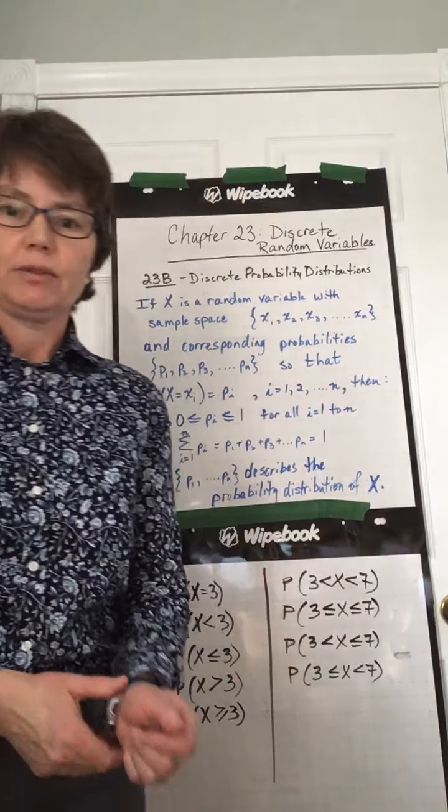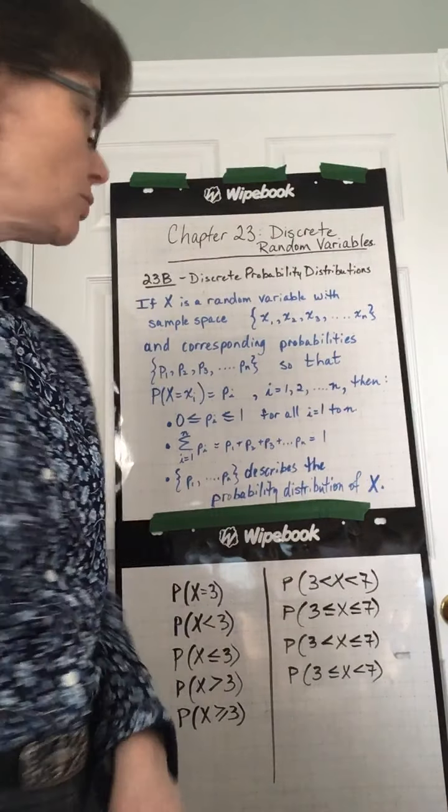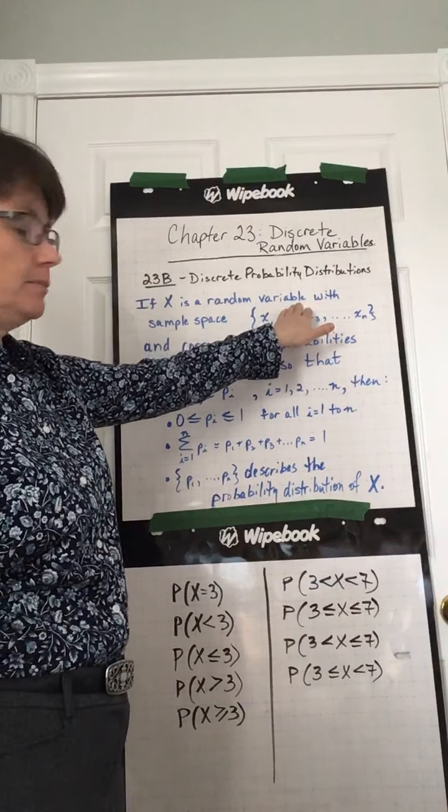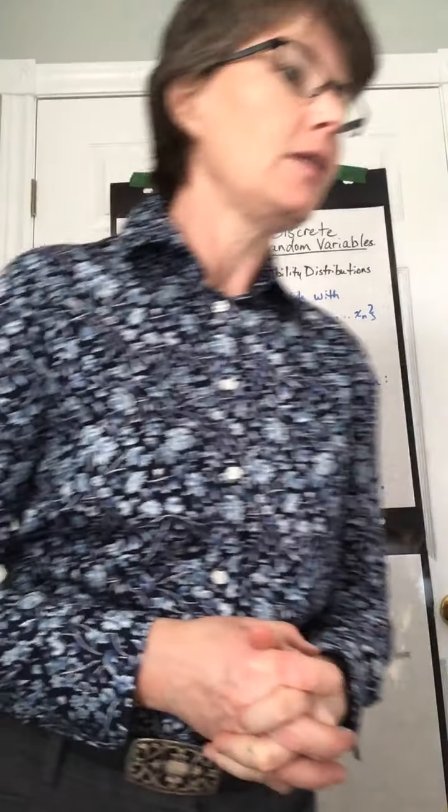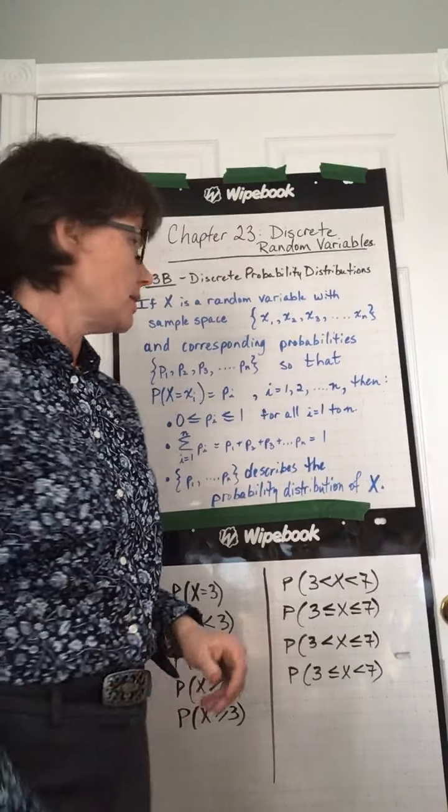Okay, so chapter 23, section B, we're now talking more about probability distributions. If x is a random variable, we're just going to talk about this blue box on page 610 and decode the mathematical notation that's there.